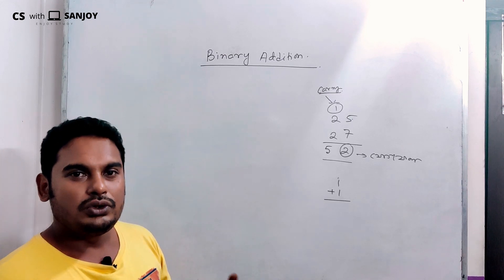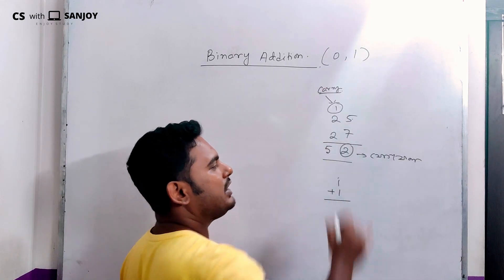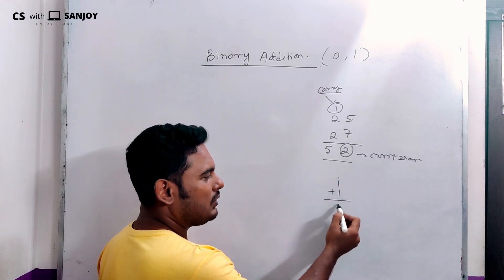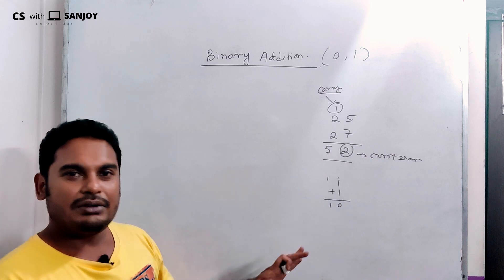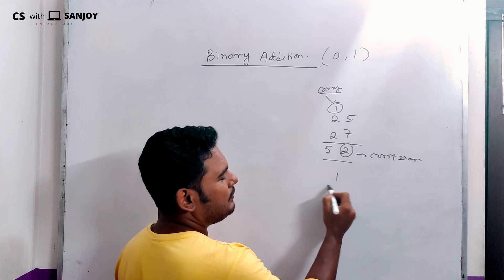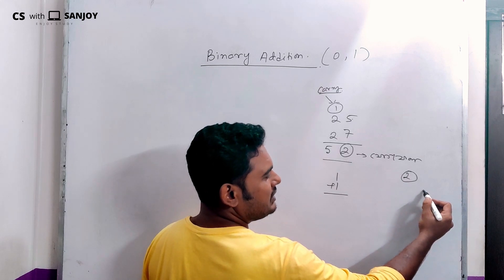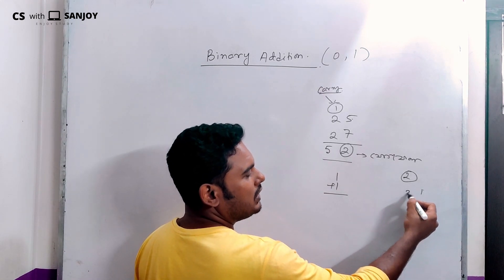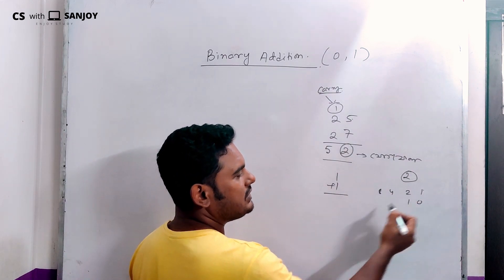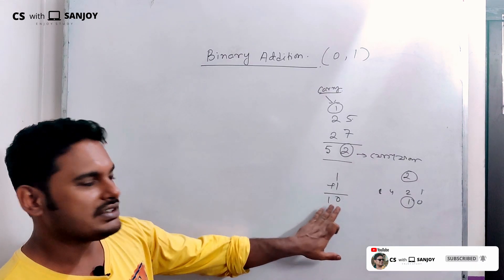2 is not a binary number. The binary digits are only 0 and 1. When we compute 1 plus 1, we get 2, which in binary is written as 1 0 — that is, sum 0 and carry 1. This carry is called carry 1, giving us the result 1, 0.